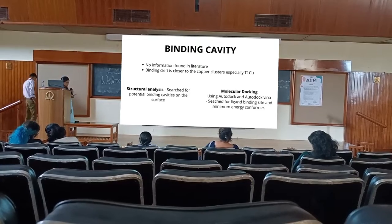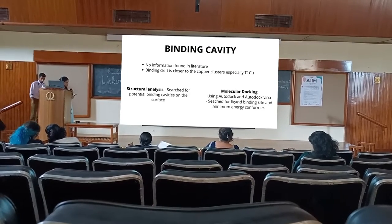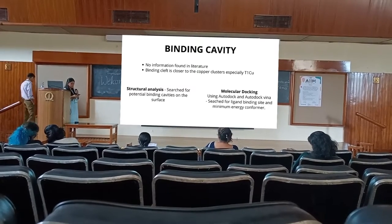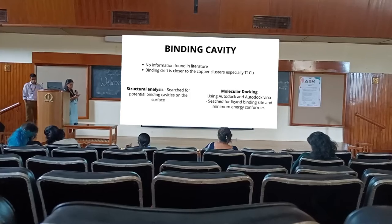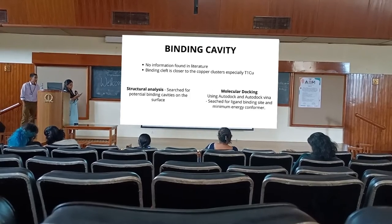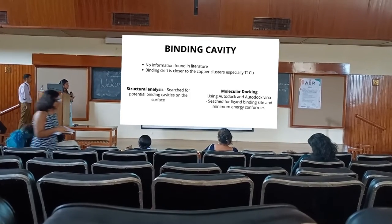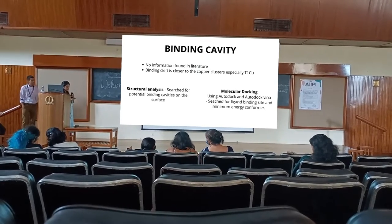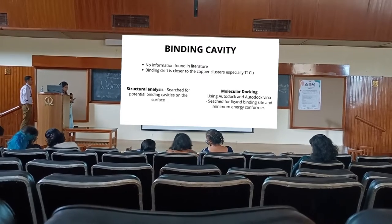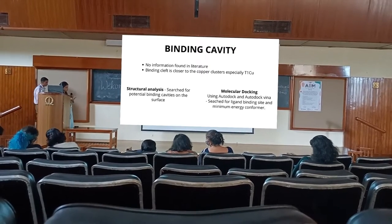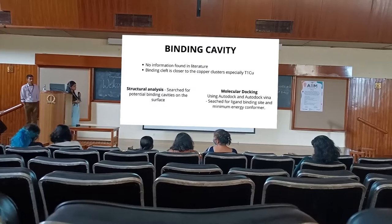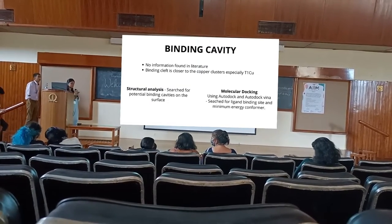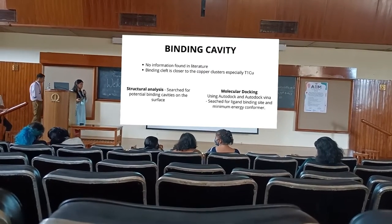For our research there are two main points of interest to increase enzyme activity: one is the T1 copper site and its surrounding amino acids, and the other is the binding cavity. There are no concrete details about where exactly the binding cavity is located, but there is a binding cleft near the T1 copper site. After extensive molecular docking, we identified which binding cleft is closest to the T1 copper site and most suitable for our project.